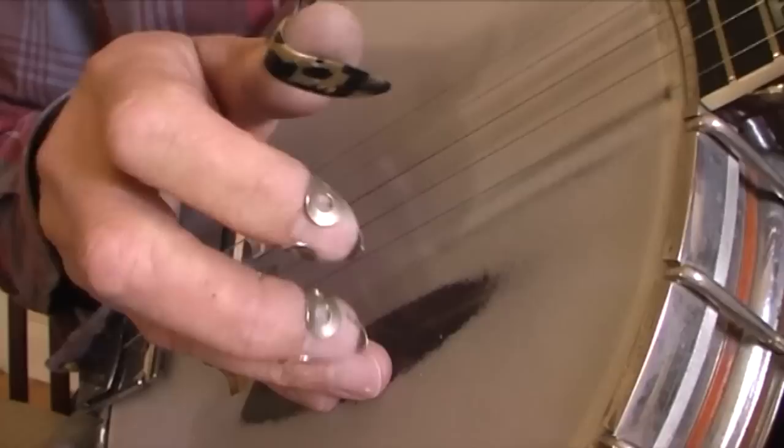The alternating thumb roll. This roll is another basic but fundamental roll to learn when playing bluegrass banjo. Firstly, make sure that the fifth and fourth fingers of your picking hand are anchored properly on the banjo head.